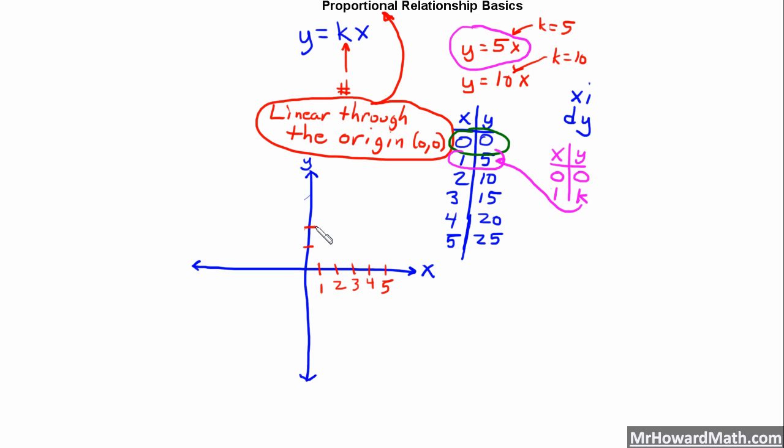We're going to go up 5 at a time here: 5, 10, 15, 20, 25. Let's put our points in. We know we've got the point 0, 0. There's the important point right there. Very important. Linear through the origin. Point 0, 0 will always be there. Then we have 1 and 5, 2 and 10, 3 and 15, 4 and 20, and 5 and 25.